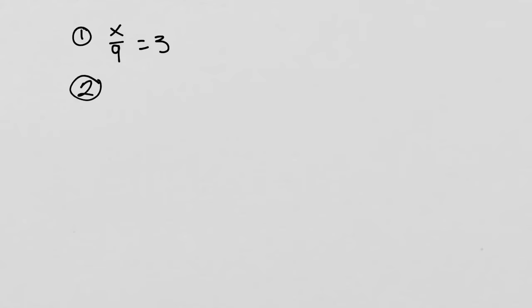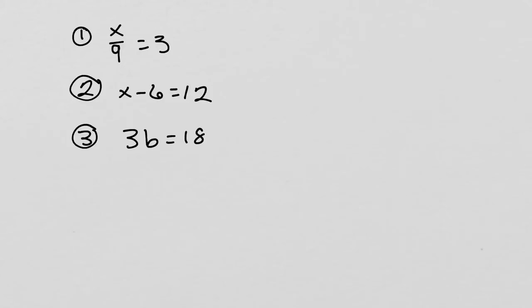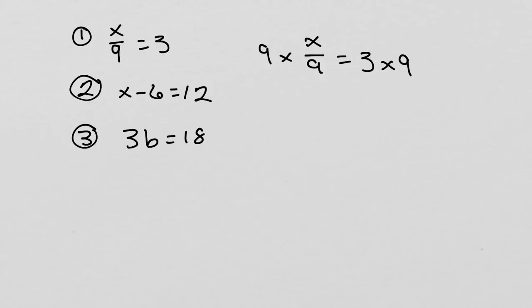Now try these questions and leave your answers in the comments section. Number 1: Solve for x and x over 9 equals 3. Number 2: Solve for x and x minus 6 equals 12. Number 3: Solve for b and 3b equals 18. Remember, you are just performing the opposite operation on both sides. So in the first question, the 9 is dividing. We will perform the opposite operation, so you will multiply both sides by 9. The 9 will cancel out, and 3 times 9 is 27, so x will be 27.